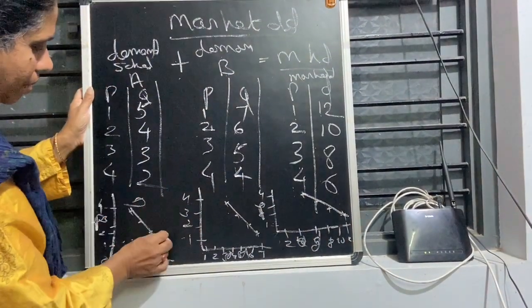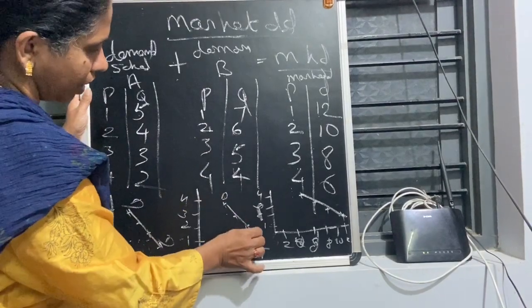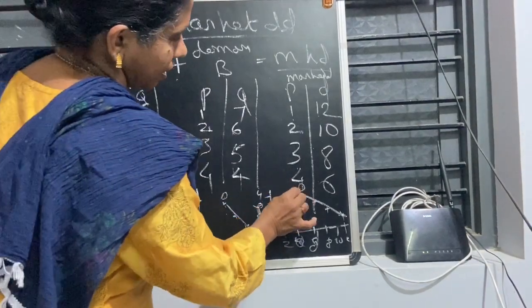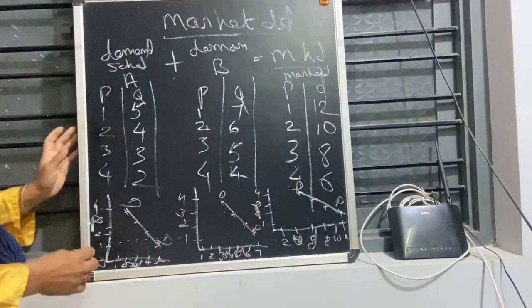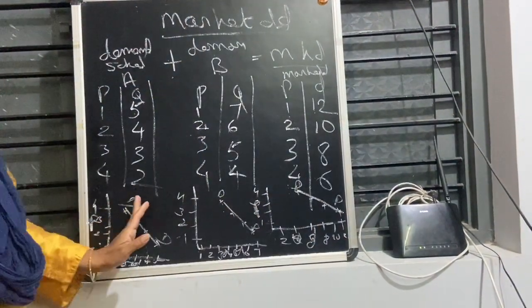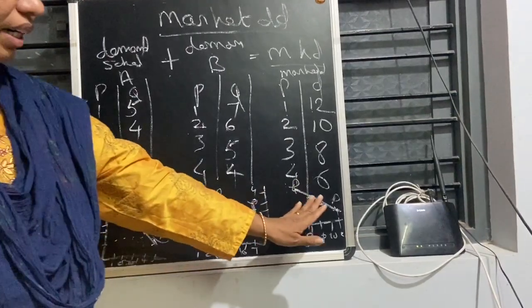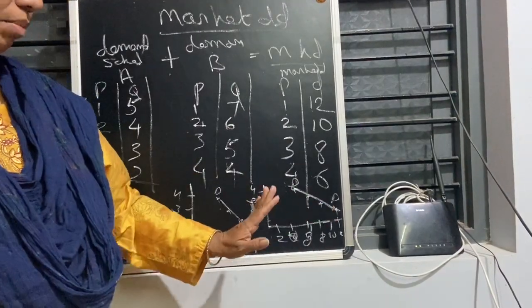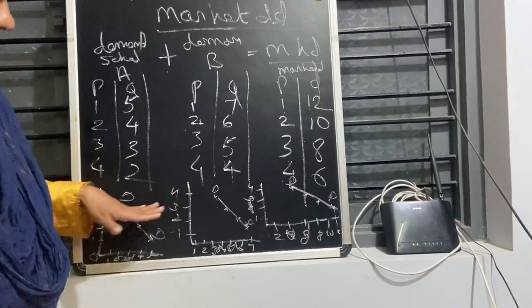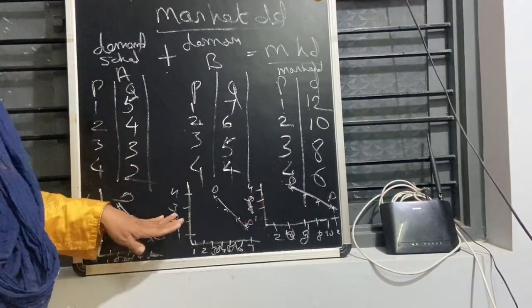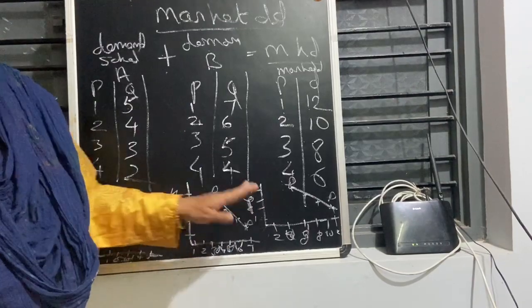This is the demand curve of A and B combined — this is the market demand. We are adding the individual demand curves to get the market demand, adding them horizontally. We call it horizontal summation.